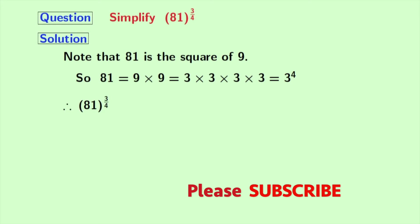Now, move to our problem which is 81 power 3 by 4. As 81 is equal to 3 power 4, we can write it as 3 power 4 whole power 3 by 4.